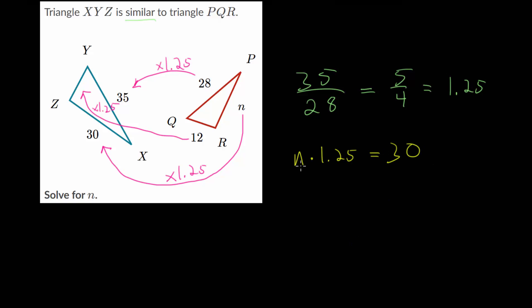And to solve for n, let's divide each side by 1.25. So we have 30 divided by 1.25. Or if you want, you could rewrite this as a fraction. We have 30 divided by 5 fourths.